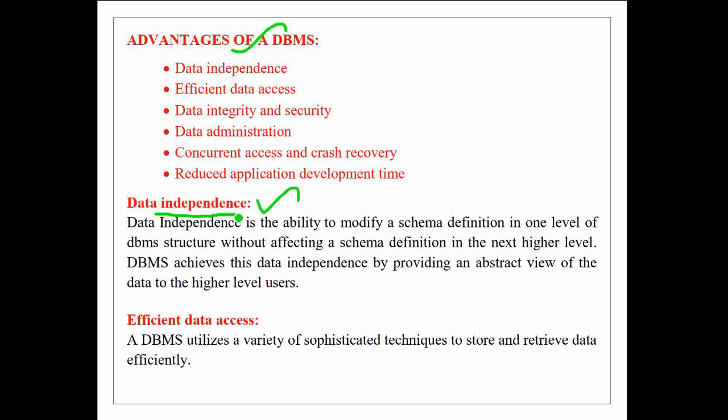First, data independence. Data independence is the ability to modify a schema definition in one level of a DBMS structure without affecting the schema definition in the next higher level of DBMS. DBMS achieves this data independence by providing an abstract view of the data to higher level users.